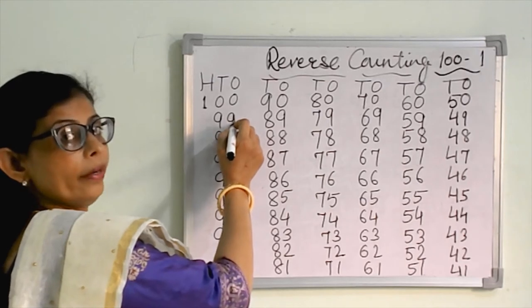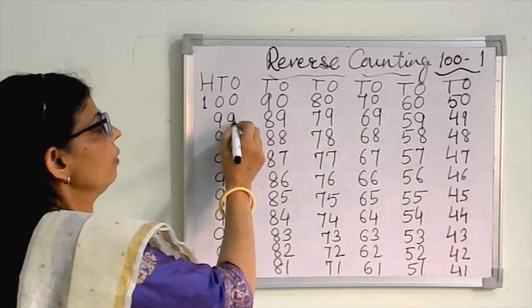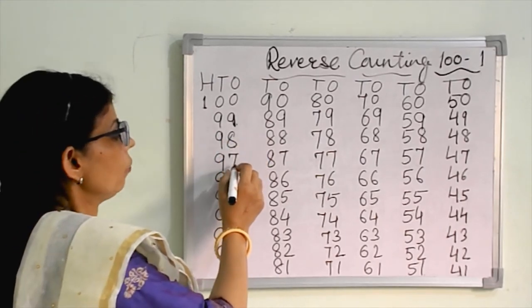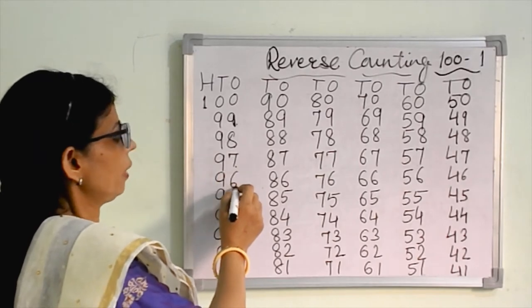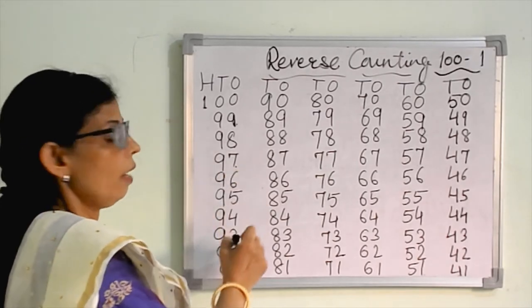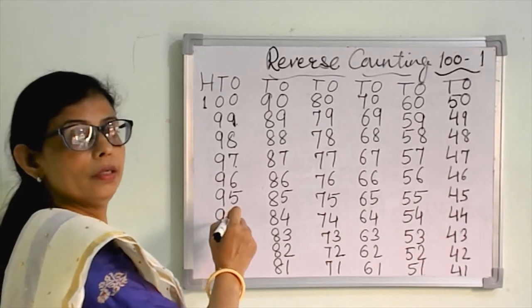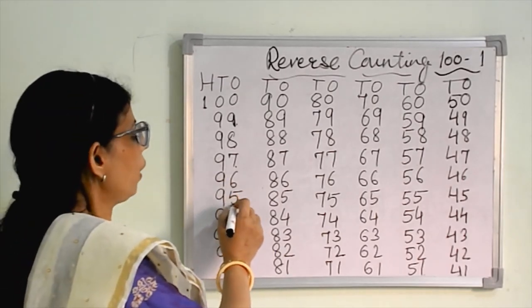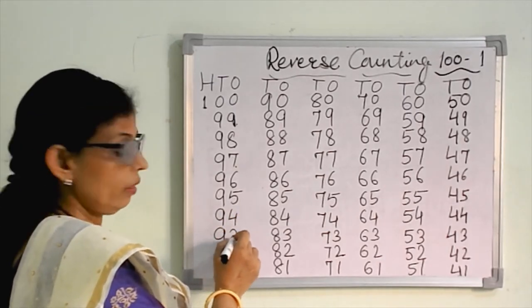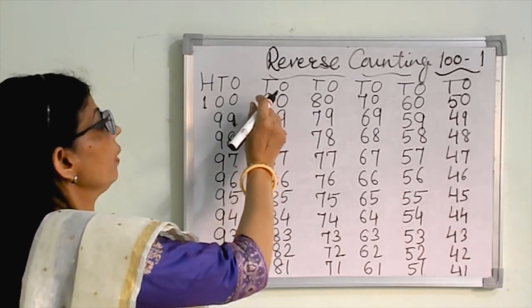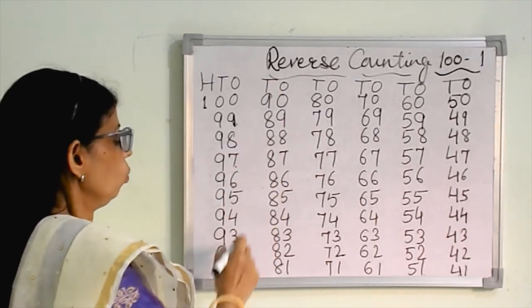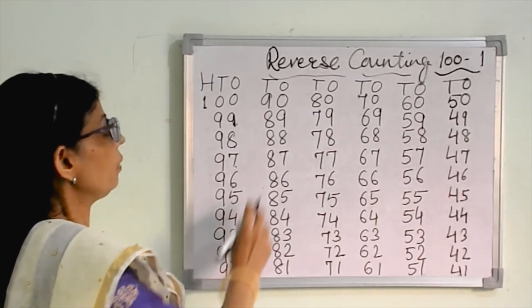What comes before hundred? Ninety-nine. You will write here ninety-nine, less one, ninety-eight, less one, ninety-seven, less one, ninety-six. Here I am minusing the number, take away. Ninety-five, ninety-four, less one, ninety-three, less one, ninety-two, less one, ninety-one. In the next line you have to write here ninety. What comes before ninety-one? Ninety, less one, eighty-nine, less one, eighty-eight, less one, eighty-seven.